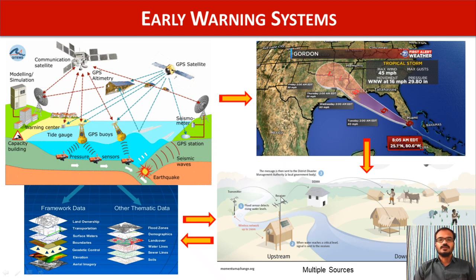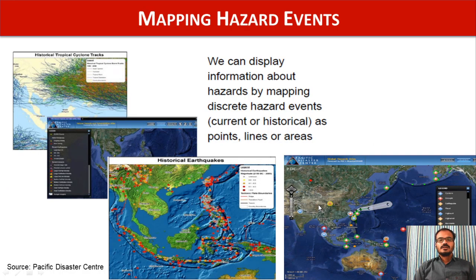Instead of warning all the people in the entire country, we can identify the area likely to be affected well in advance. With the help of geospatial technologies, we can inform the people effectively about the disaster risk well in advance, with information about intensities. Not only providing tools for early warning systems, these geospatial technologies also play a vital role in mapping hazard events, giving a clue about which region is likely to be affected in future.